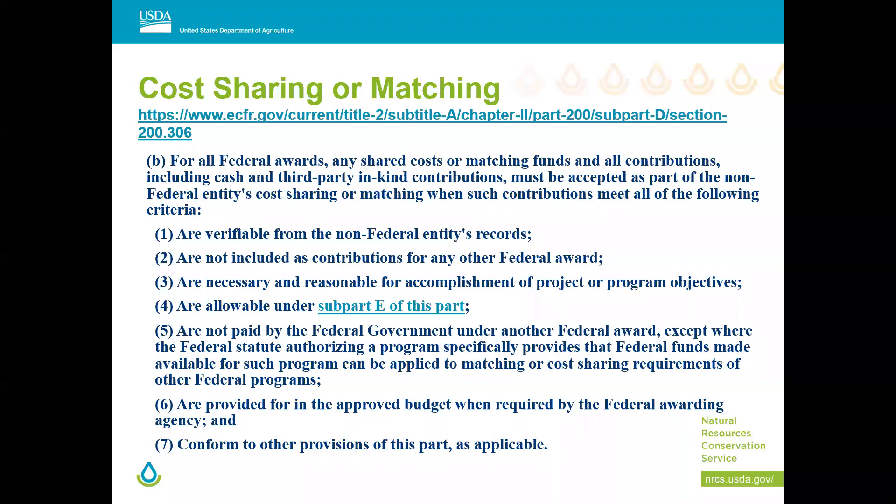These are the basic rules for what your cost share has to be — items one through seven. They have to be verifiable, they can't be matched for our award and another federal award somewhere else, and they have to be necessary and reasonable for the project to get accomplished. The matching funds can't be paid by the federal government under another federal award. So unless it's specifically authorized, if you're getting federal funding from Bonneville Power, you can't use that as a match for NRCS.